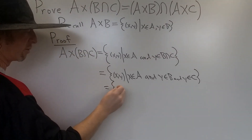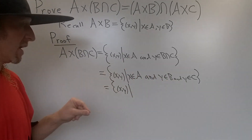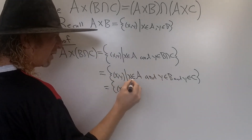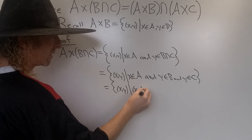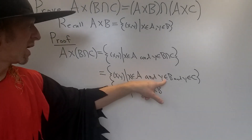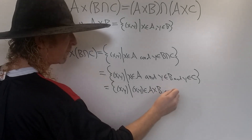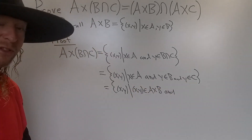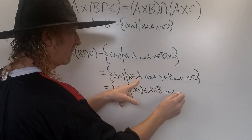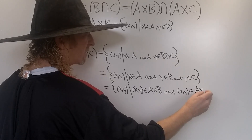So this is equal to the set of all ordered pairs X comma Y such that X is in A and Y is in both sets. One way to write this is: X is in A and Y is in B, meaning the ordered pair X comma Y is in A cross B. And X is in A and Y is in C, so the ordered pair X comma Y is in the Cartesian product A cross C, because the first component is in A and the second component is in C.